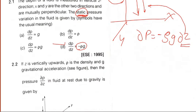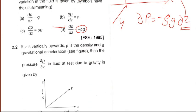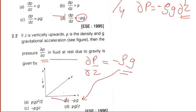Question number 2, same question. If Z is vertically upward, rho is density and G is gravitational acceleration, then the pressure del P by del Z in the fluid at rest due to gravity is given by. So the answer will be D.